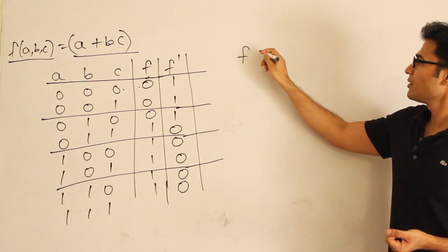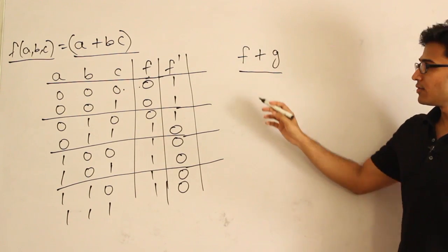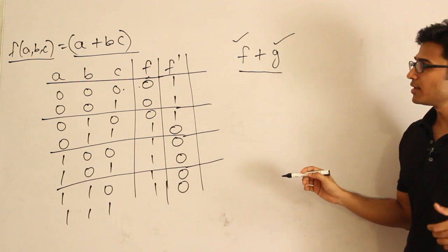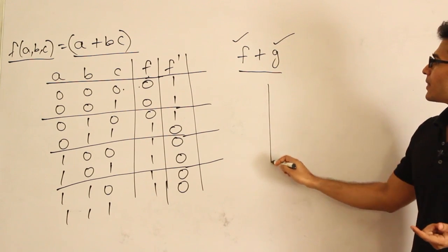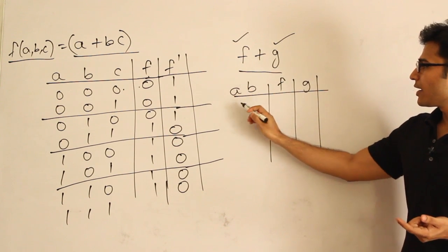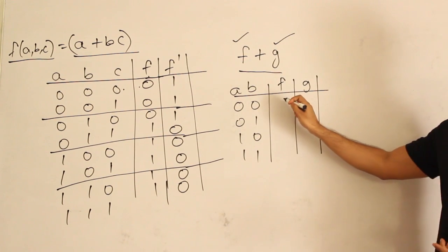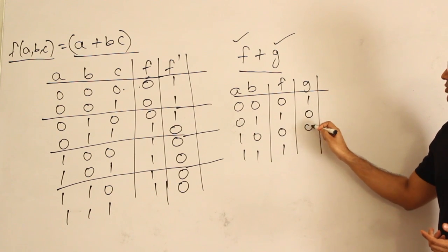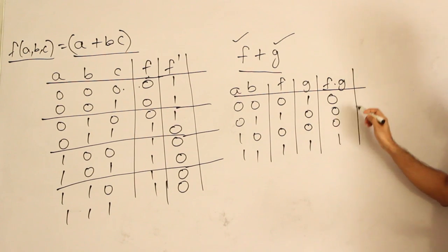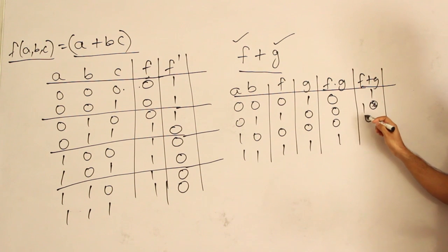You can define a function f and then OR it with a function g. For a given value of inputs a, b, c, if either f is 1 or g is 1, then the output is going to be 1. For example, with two variables a and b giving combinations 0,0 / 0,1 / 1,0 / 1,1 - suppose f has values 0,1,0,1 and g has values 1,0,0,1. Then the ANDing of fg gives 0,0,0,1, and the ORing of f plus g gives 1,1,0,1.